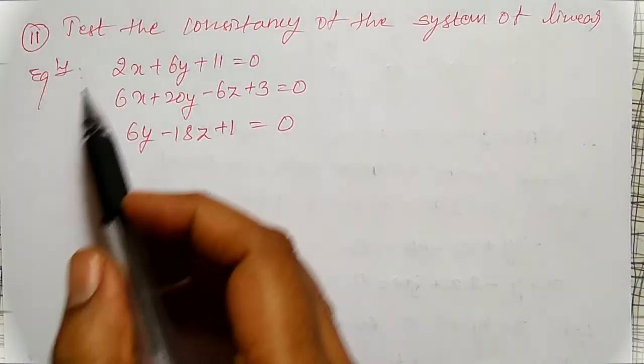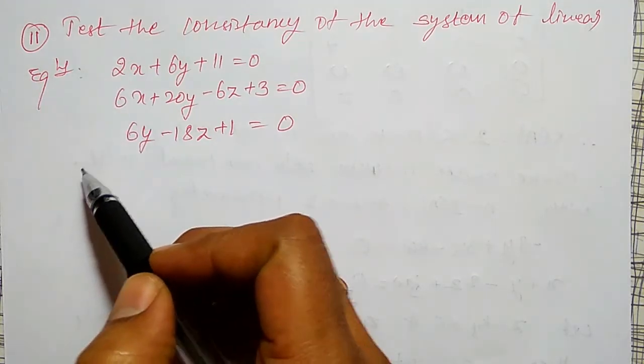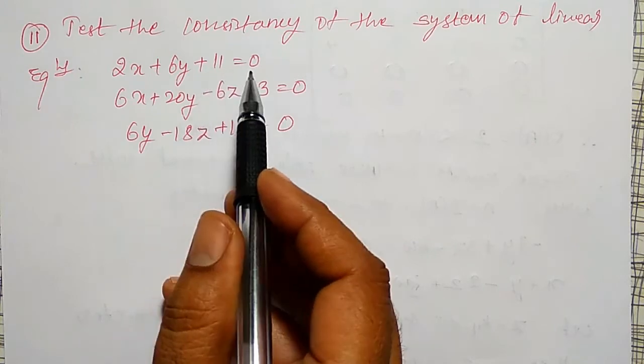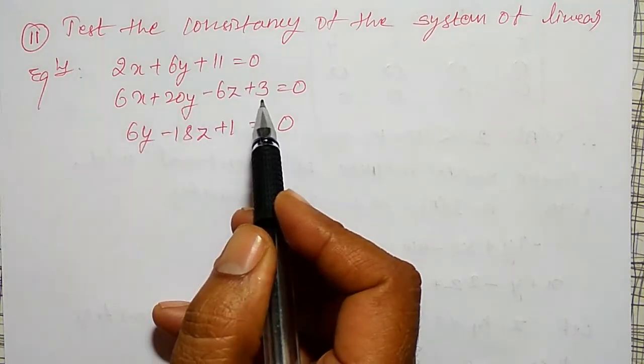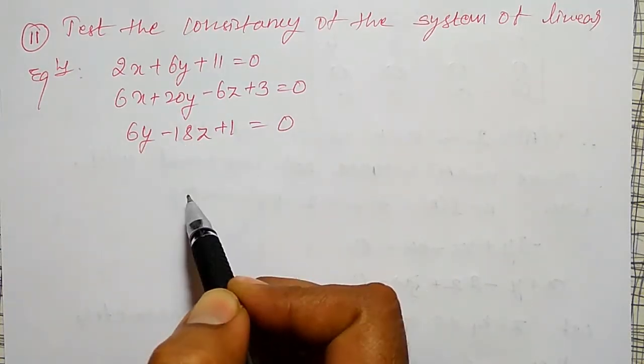One more example on testing of consistency of linear equations I am going to do. The equation is 2x plus 6y plus 11 equal to 0, 6x plus 20y minus 6z plus 3 equal to 0, 6y minus 18z plus 1 equal to 0.